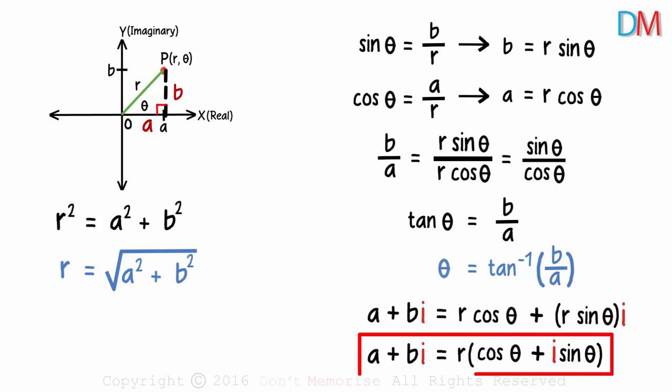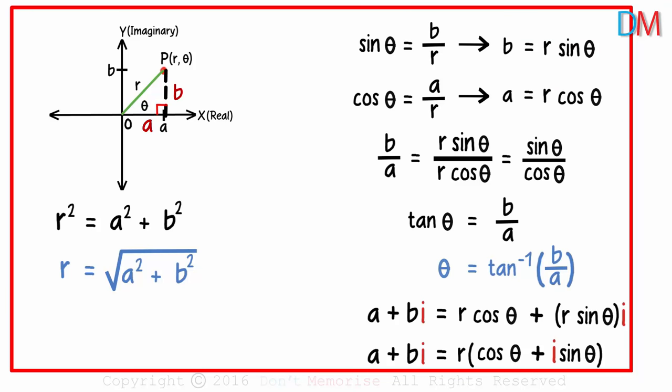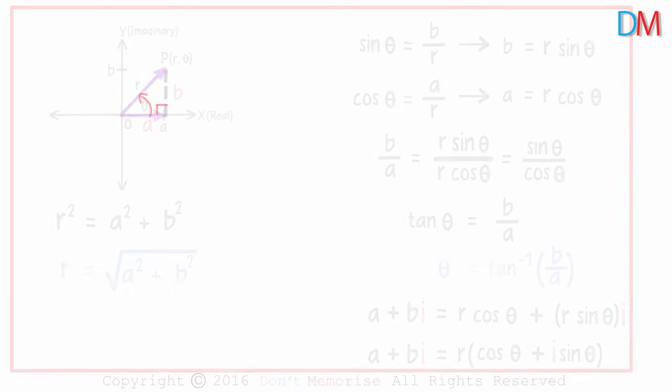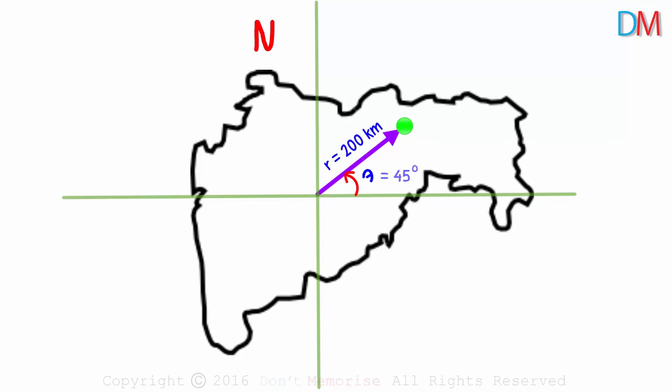Why do we need the polar form? We often use this concept in locating a point. We specify direction along with the distance from a central point. For instance, while marking places on a map, we say that a particular city is 200 km northeast. So r is 200 and theta is 45 degrees.